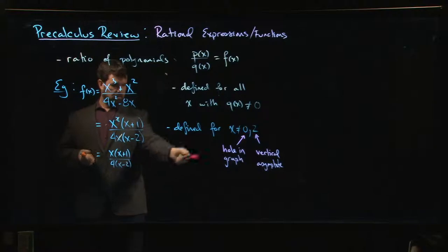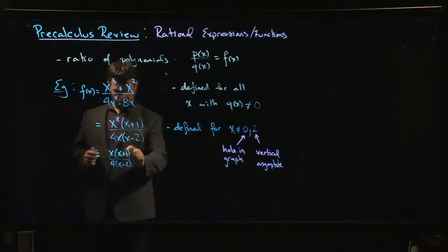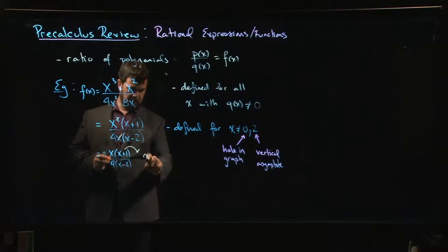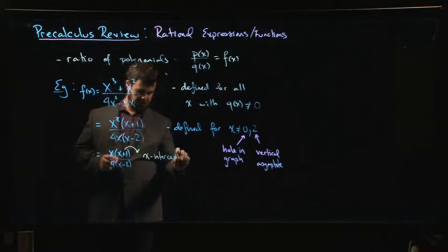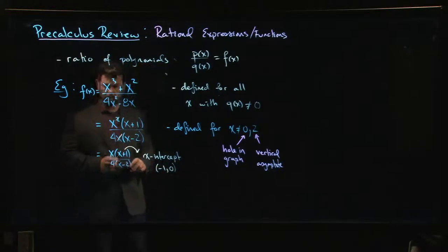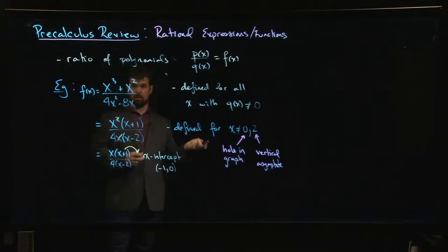The other thing that we know is that there is an x-intercept when x is equal to minus 1, y is equal to 0. So if we're graphing, we know that our graph crosses the x-axis at minus 1.